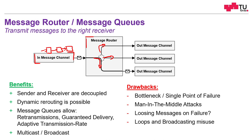Loops and broadcast misuse can happen if two message routers are configured incorrectly — they could loop messages between each other or broadcast them endlessly, completely overwhelming themselves, resulting in a denial-of-service situation. This happens more often than you'd think. Finally, there is configuration overhead: we have to set up the channels, routing logic, and define which input messages should be sent to which output channels.